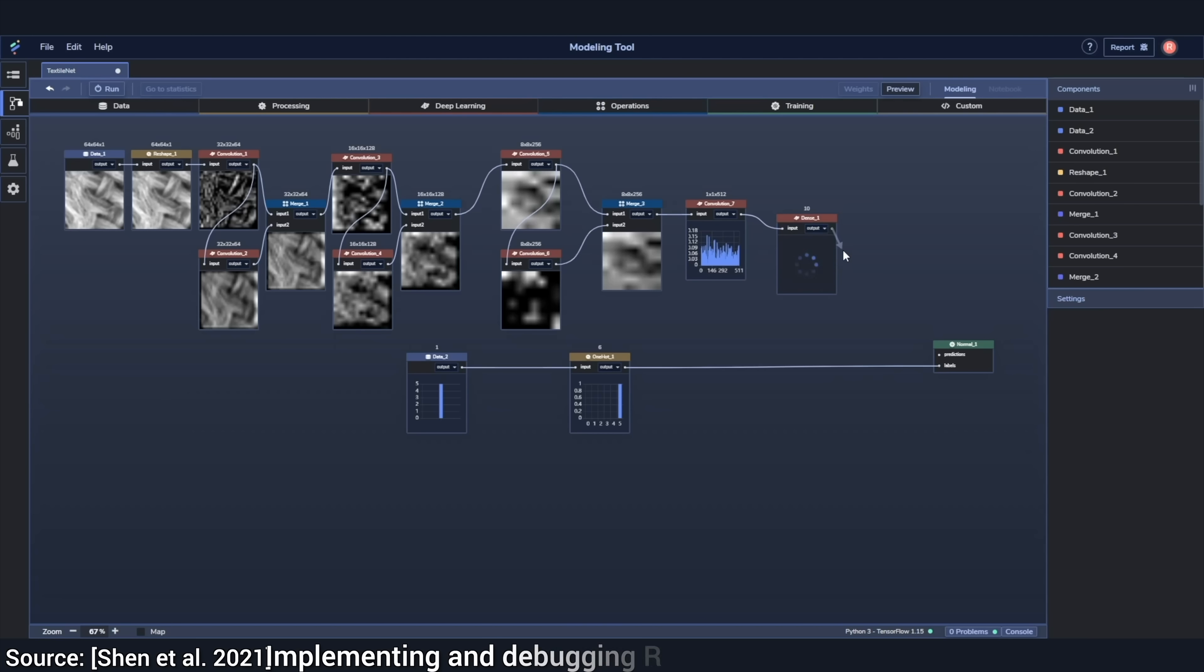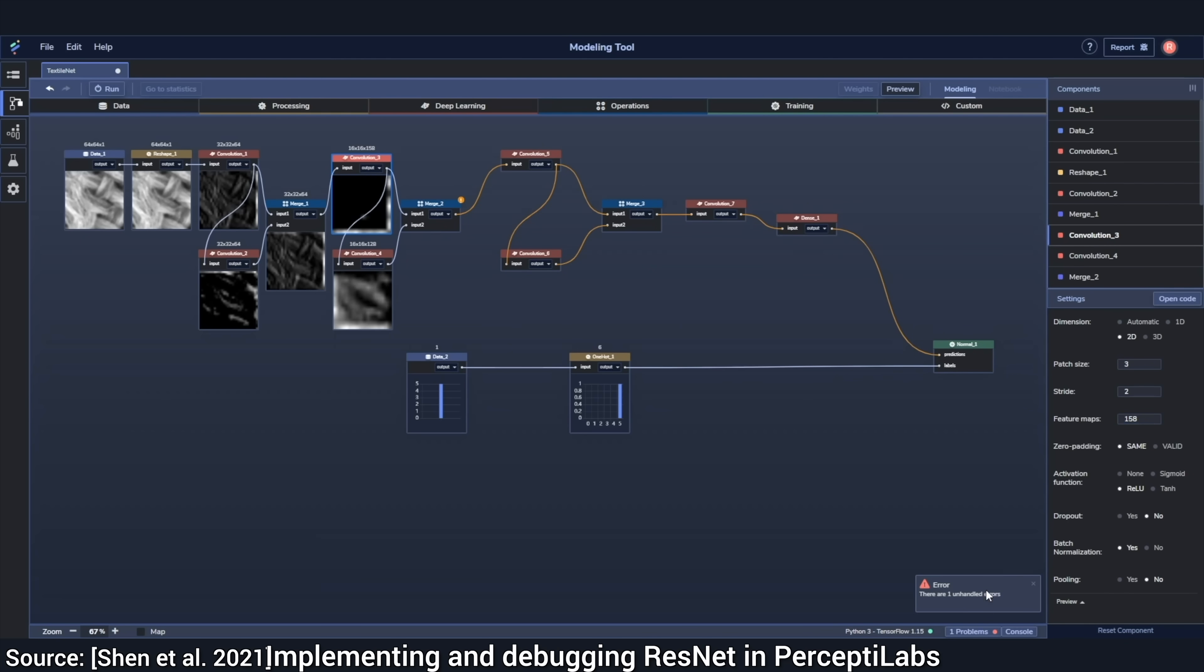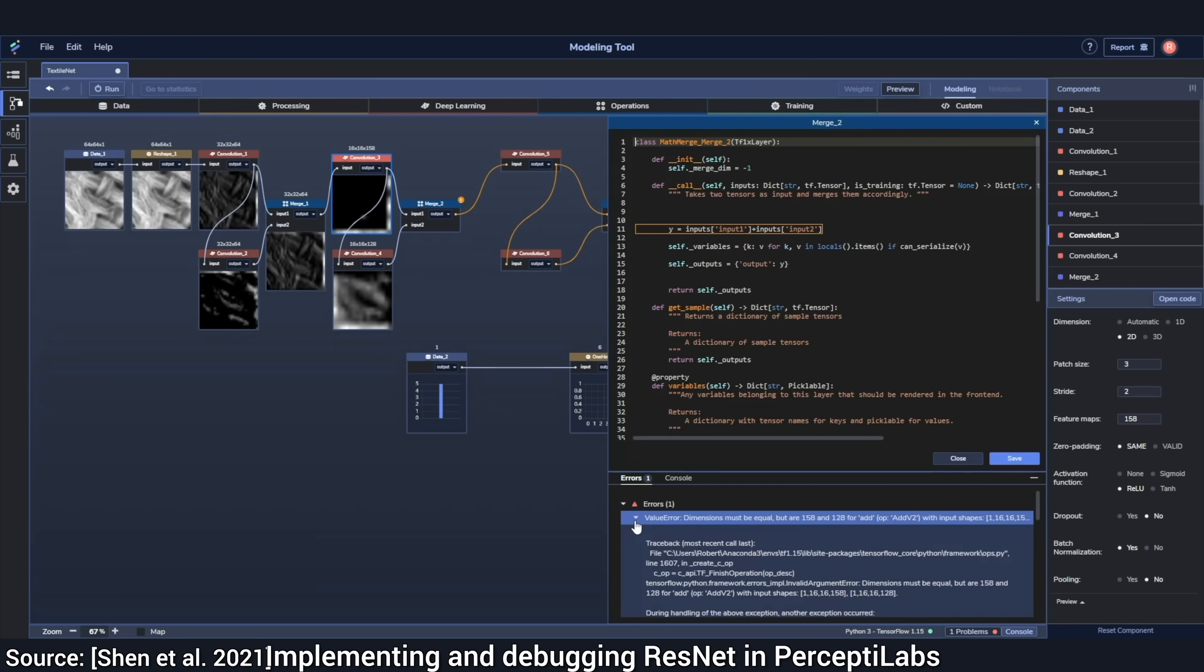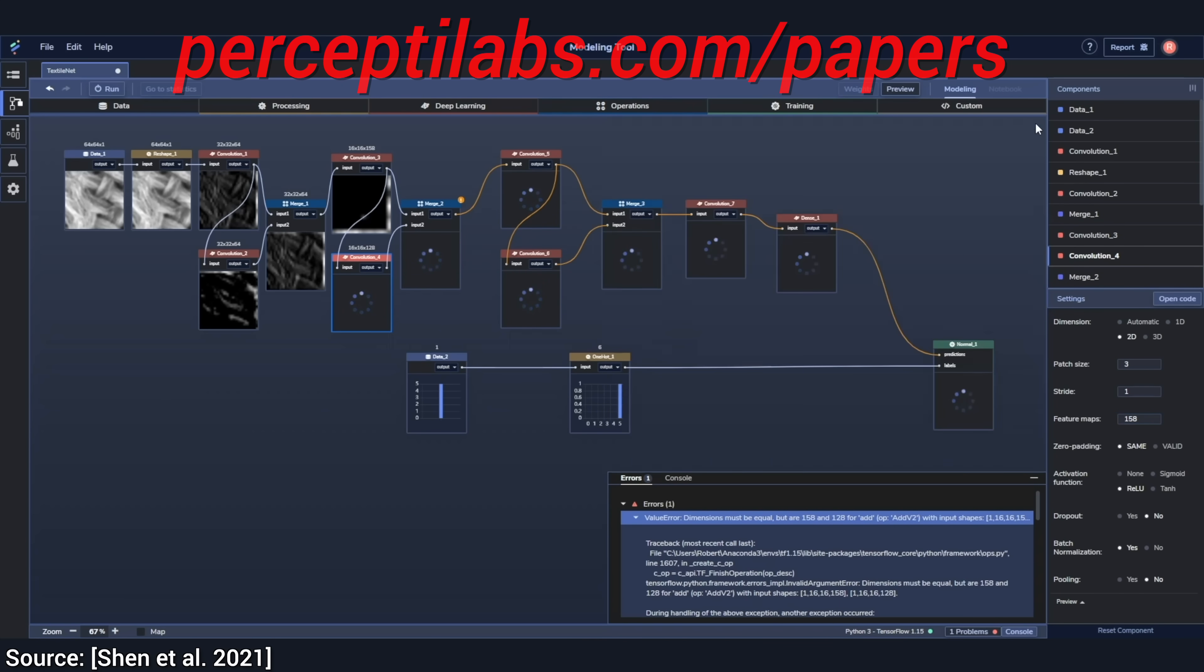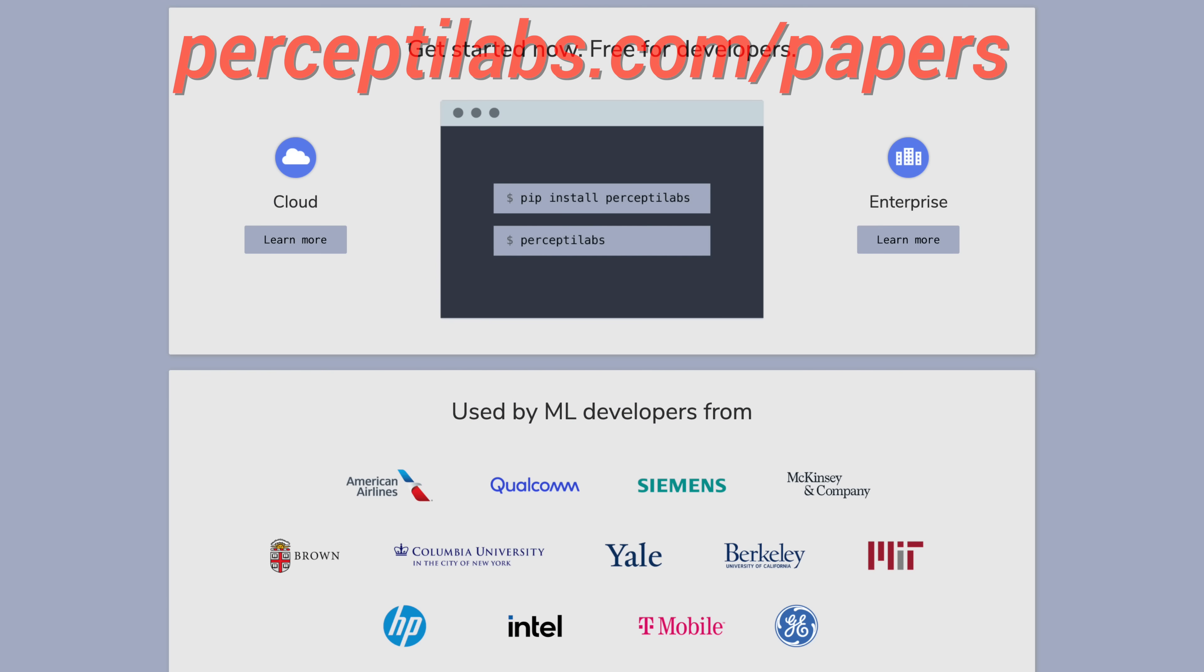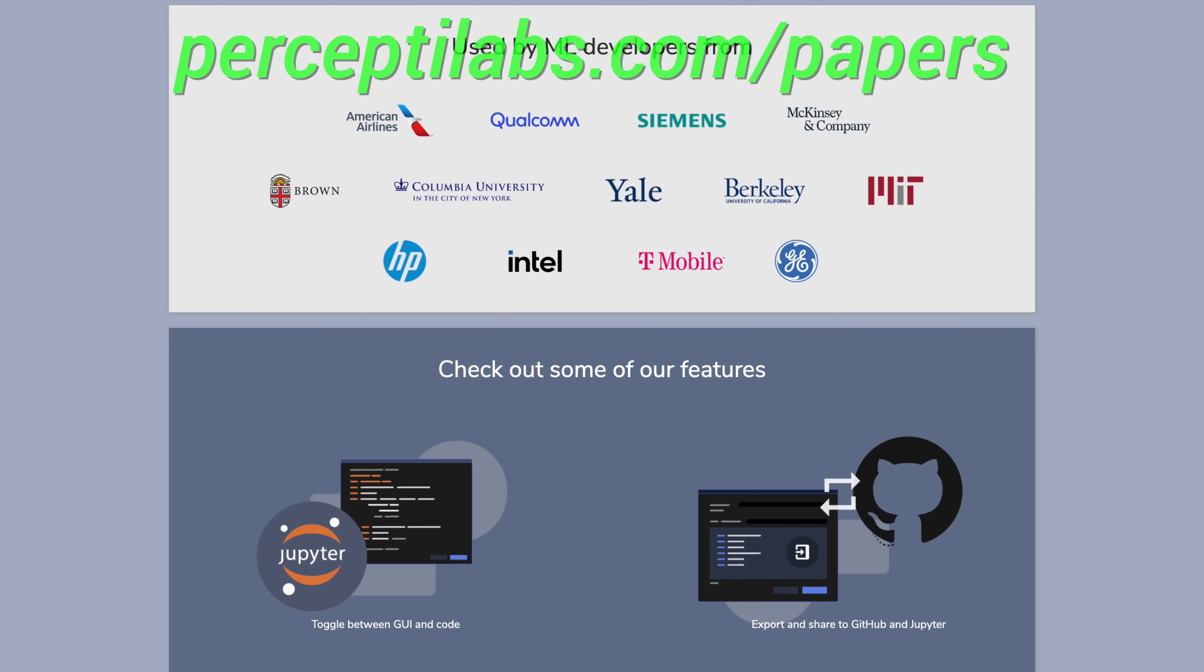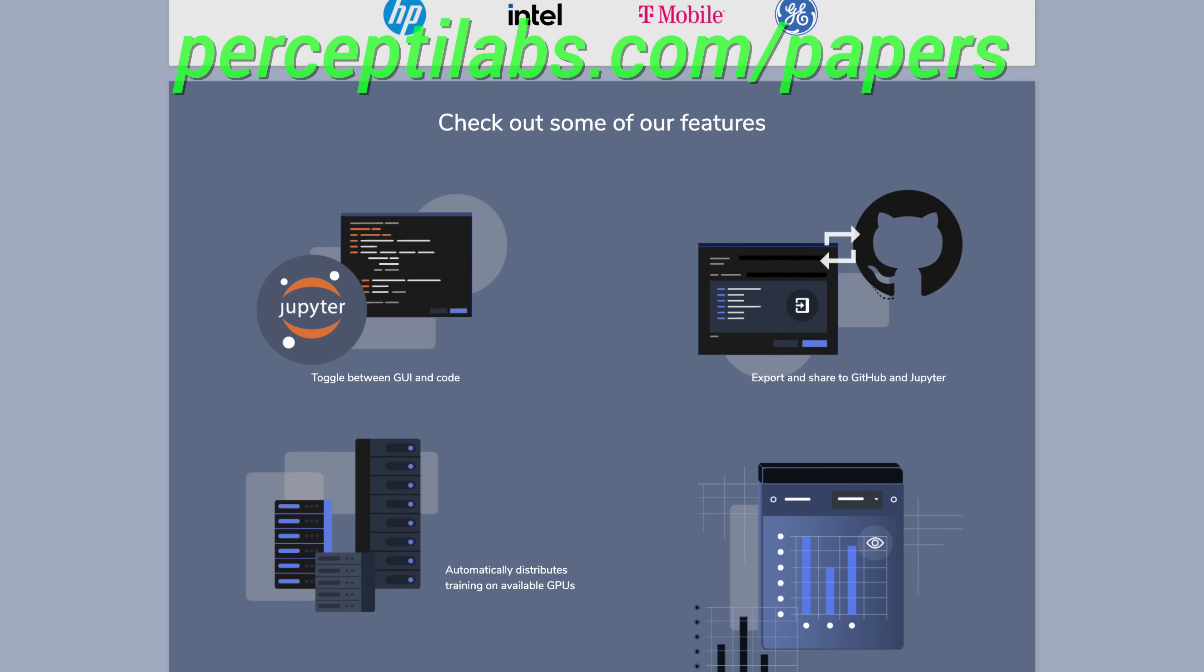PerceptiLabs is a visual API for TensorFlow, carefully designed to make machine learning as intuitive as possible. This gives you a faster way to build out models, with more transparency into how your model is architected, how it performs, and how to debug it. Look, it lets you toggle between the visual modeler and the code editor. It even generates visualizations for all the model variables, and gives you recommendations both during modeling and training, and does all this automatically. I only wish I had a tool like this when I was working on my neural networks during my PhD years. Visit perceptilabs.com slash papers to easily install the free local version of their system today. Our thanks to PerceptiLabs for their support and for helping us make better videos for you.